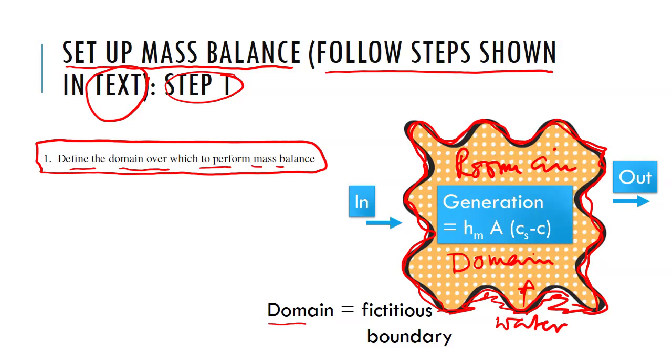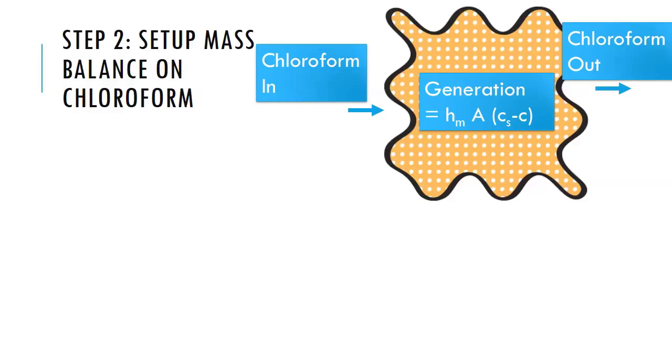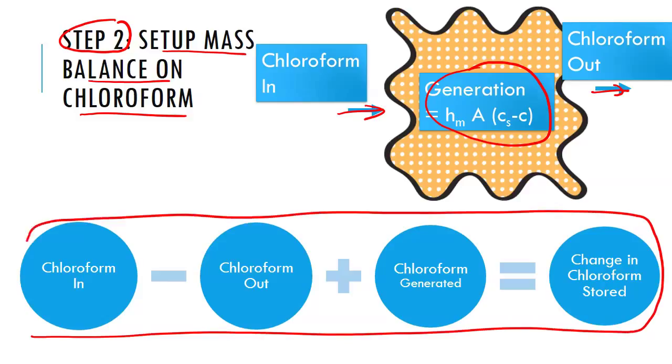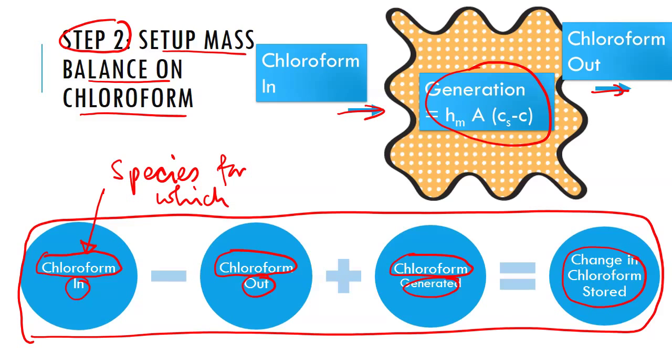In step 2 we set up the mass balance on chloroform. So we have chloroform coming in and going out with generation and so we put all this together in our equation that we have used a number of times in energy transport. It's in minus out plus generation is equal to change in the amount stored. Notice that we are doing this balance on chloroform in air, not the entire air. So this is my species for which the balance is done.